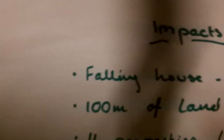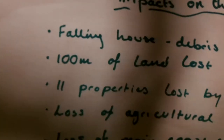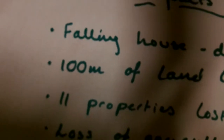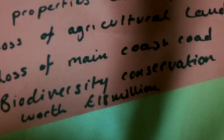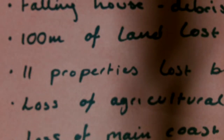The impacts on the environment: falling houses cause debris in the sea. 100 metres of land has been lost in 20 years, but previously 250 metres was lost between 1600 and 1850. 11 properties are thought to be lost by 2025, including caravan parks, pubs and churches, along with the loss of the main road and agricultural land. Biodiversity on the Norfolk Broads is worth £18 million and is thought to be lost in that time.